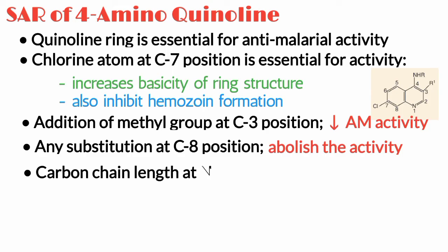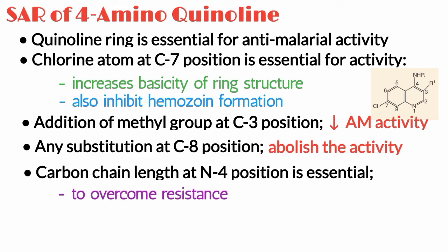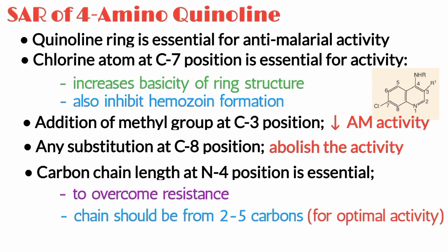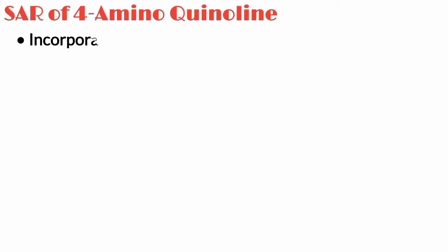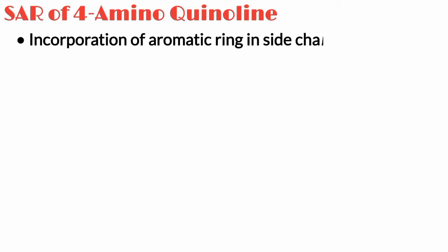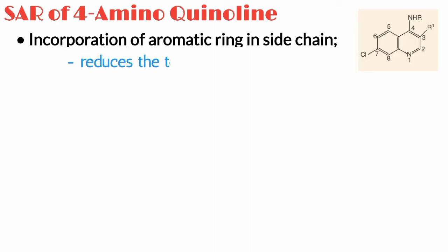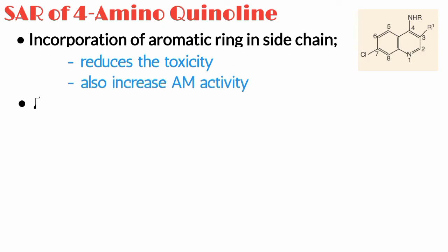The carbon chain length at the N4 position is essential to overcome resistance against malarial parasites, and this chain should be from 2 to 5 carbons for optimal activity. Incorporation of an aromatic ring in this side chain reduces toxicity and also increases antimalarial activity.